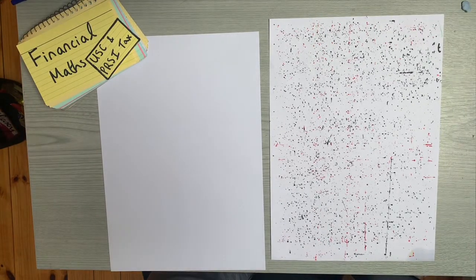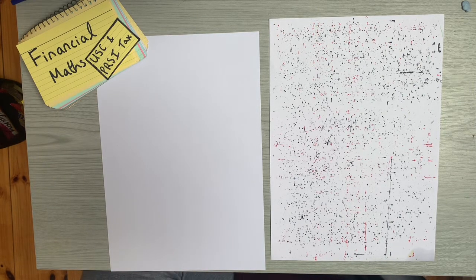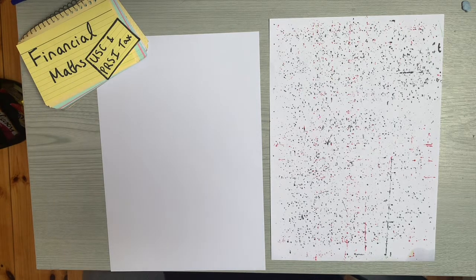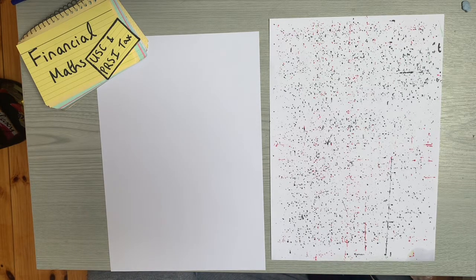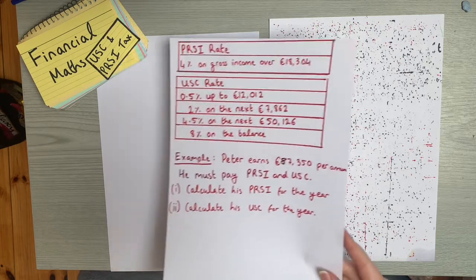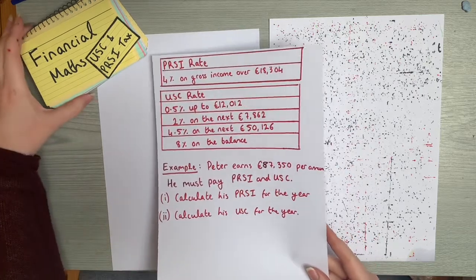One of the last things we have to look at with income tax is USC and PRSI. These are two other taxes that people pay. USC stands for Universal Social Charge and PRSI stands for Pay Related Social Insurance. These are very similar to how we calculate a gross tax of PAYE, but USC has a few more steps to it.